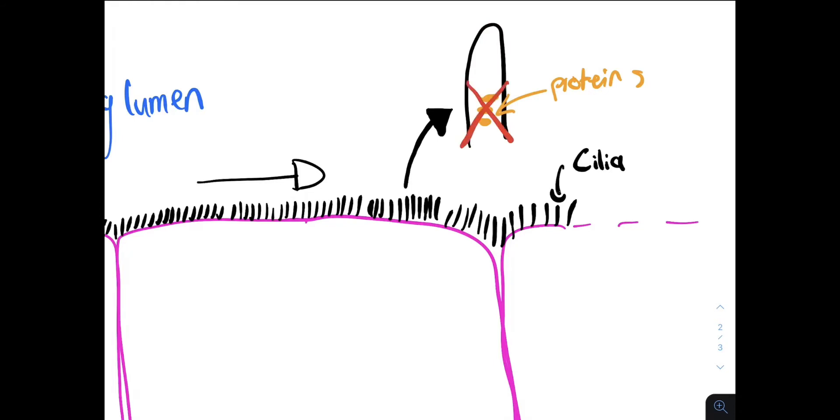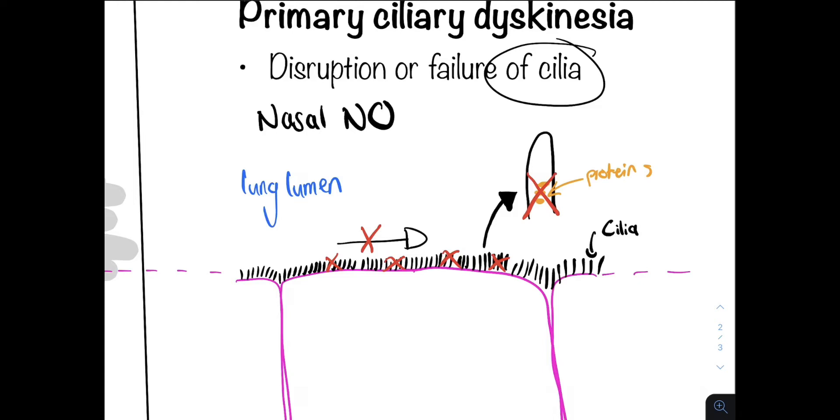This results in either loss of the synchronized motion or complete failure of the cilia. There is no specific investigation for PCD, but measuring nasal nitric oxide production is very sensitive for a PCD diagnosis.